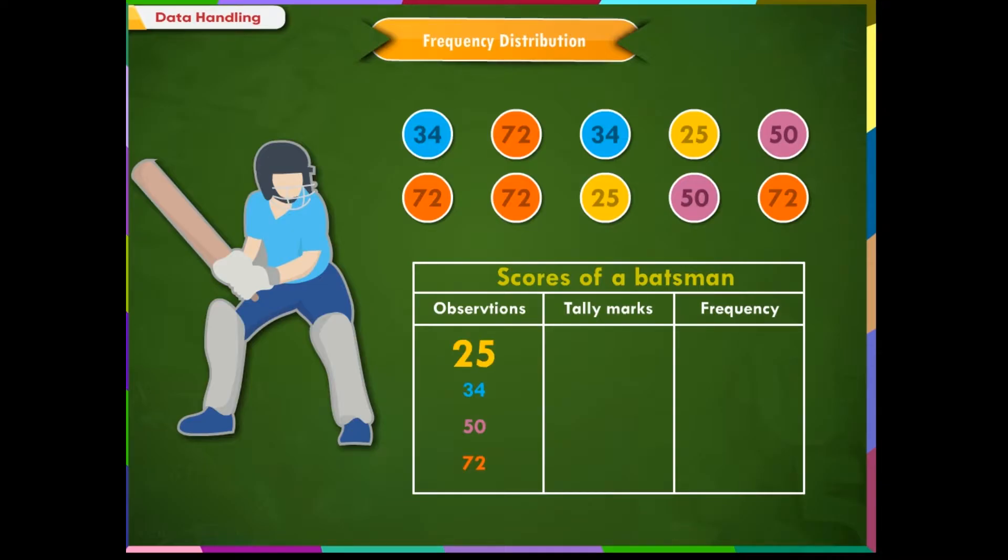There is only one 25, so put one mark in the tally mark column. Since the number 25 is appearing only once, we write one in the frequency column.